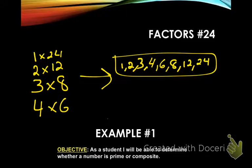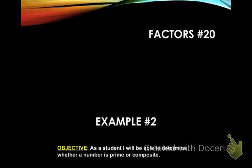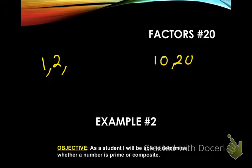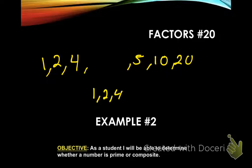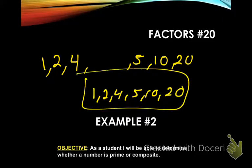Let's look at the factors of 20. We always start with one, because one times a number always equals that number, so one and 20. Two — it's an even number, so two goes into it: two and ten. What about three? Three, six, nine, twelve, fifteen, eighteen, twenty — no. What about four? Four and five. I've already got five as the next number, so I'm done. The factors of twenty are: one, two, four, five, ten, and twenty.